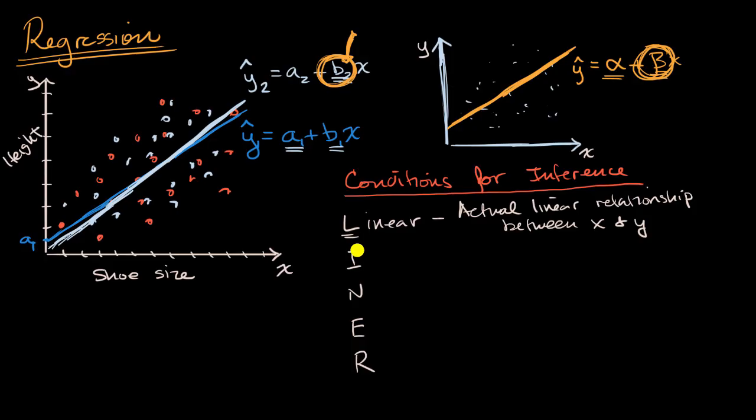Now, the next one is one we have seen before when we're talking about general conditions for inference, and this is the independence condition. And there's a couple of ways to think about it. Either individual observations are independent of each other, so you could be sampling with replacement,